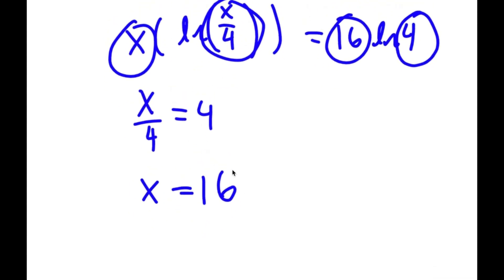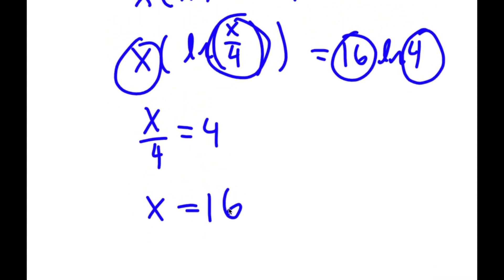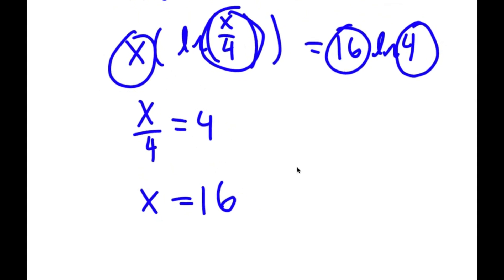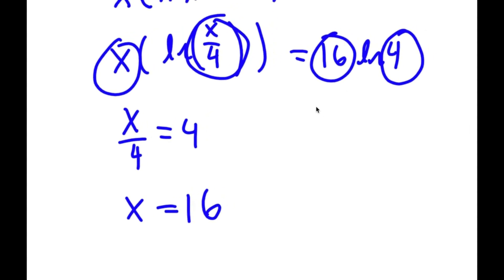To check, let me plug x equals 16 back in. I get 16 times ln of 16 divided by 4, which is 16 times ln 4, and on the right side I have 16 times ln 4. So this works.